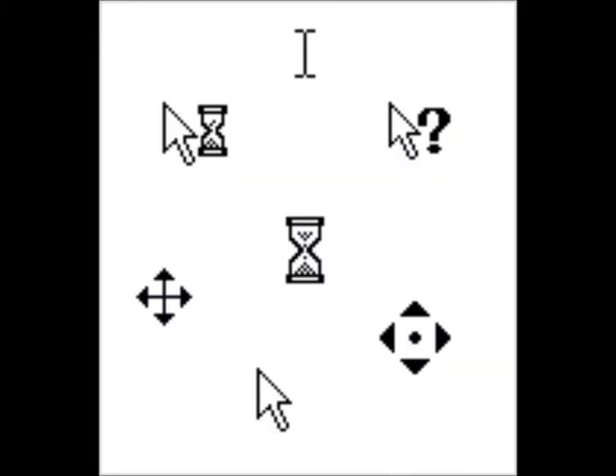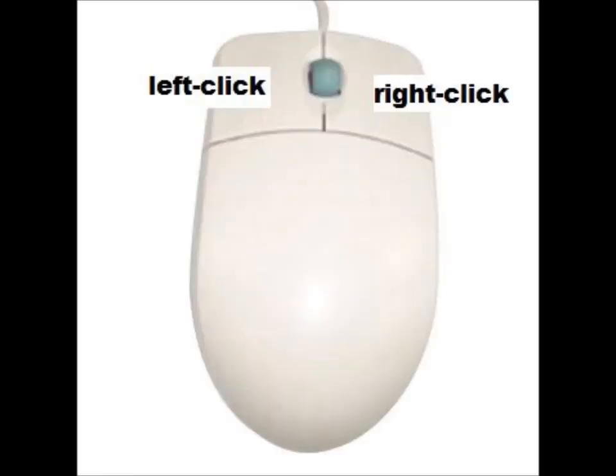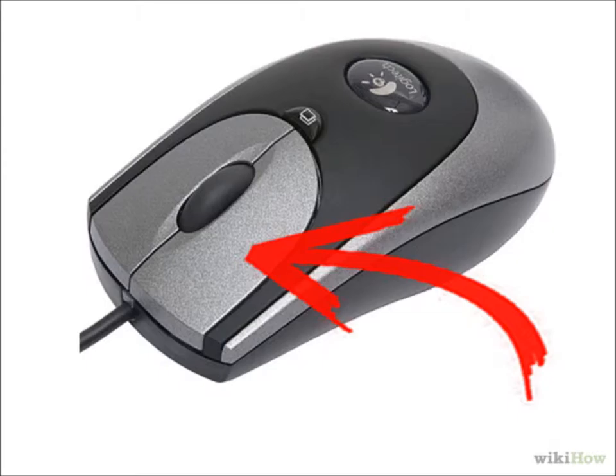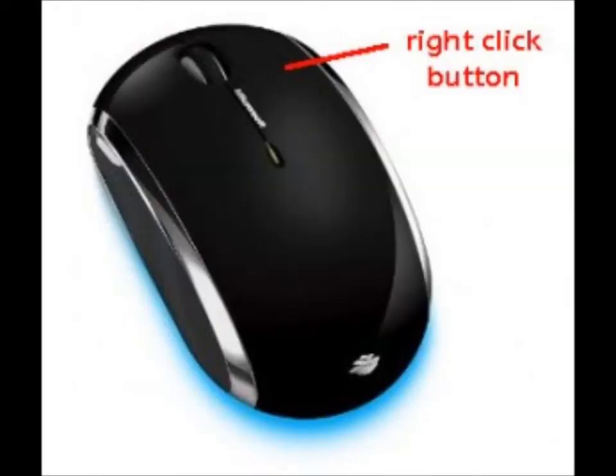The pointer, usually a white small arrow on the screen, will follow the movements you choose to do with the mouse. There are two main buttons used on the mouse. The first being the left click button — most actions are performed using this button — and the second being the right click button, which is only used for specific functions.